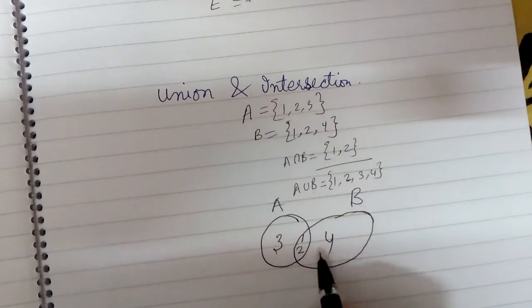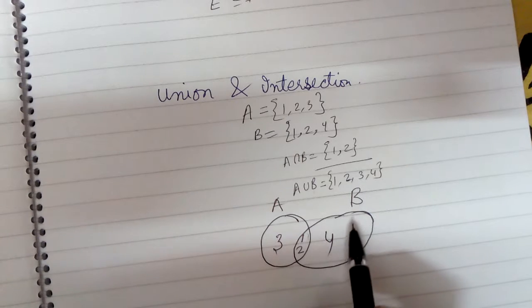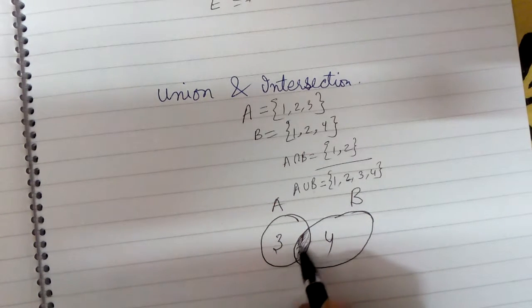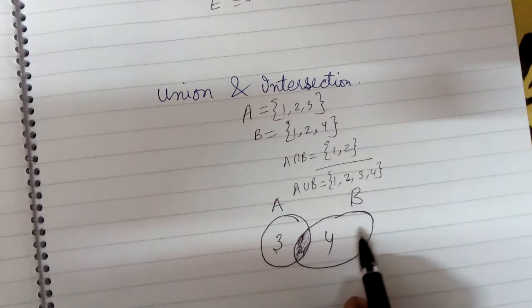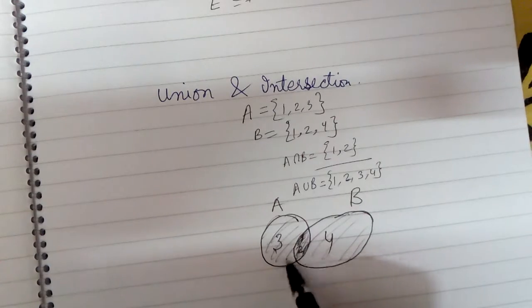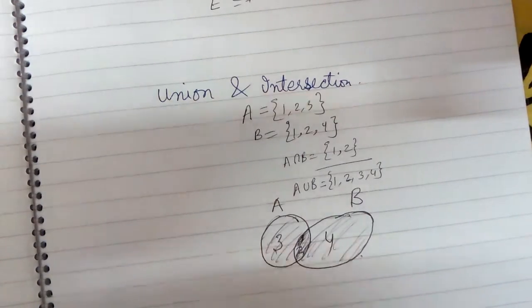So this is how we can represent, so intersection is 1, 2, this portion, the shaded one, common to them, and the union is the lightly shaded one, the whole of this.